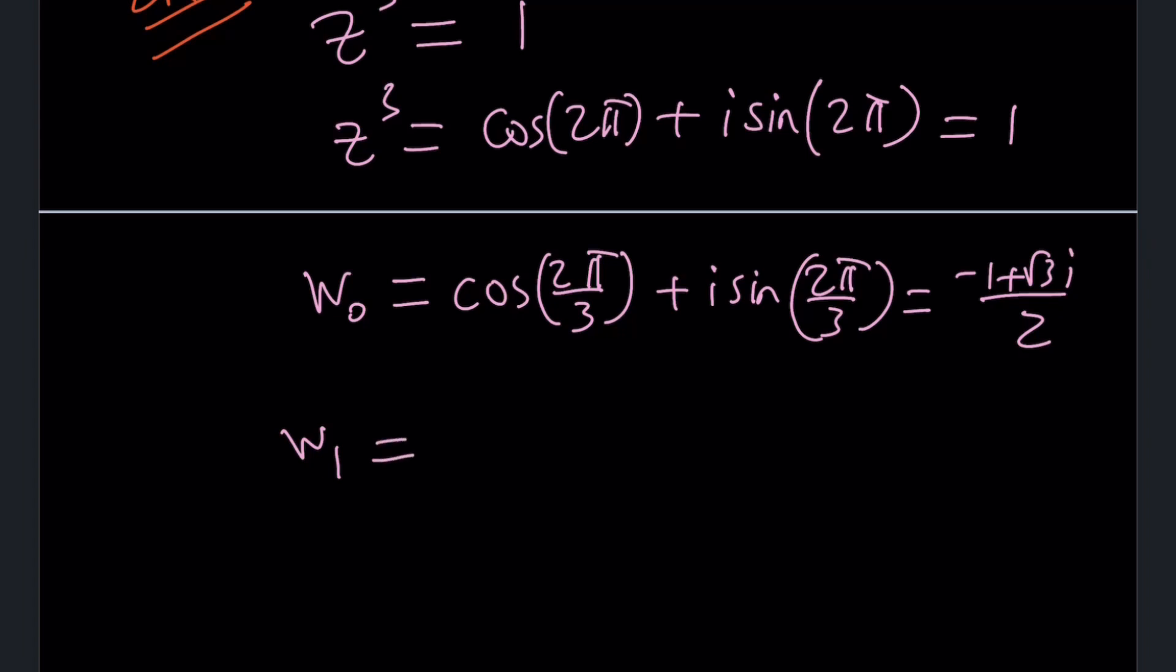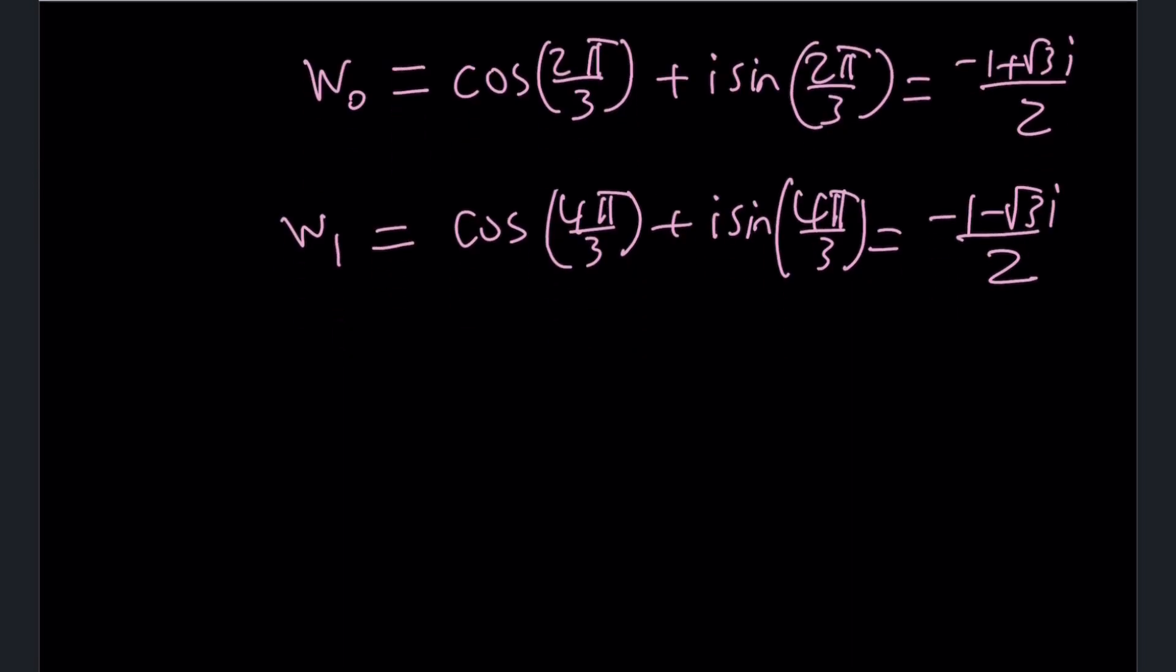And the other root, let's call that w sub 1. How do you find it? Since you have 2 pi and it will be divided into thirds, we're going to be adding 2 pi over 3 every time. So if you add 2 pi over 3, you're going to get 4 pi over 3 as the next angle. And that's going to be equivalent to negative 1 minus root 3i over 2. And where does that come from? If you evaluate these cosine and sine values, that's what you're going to get.